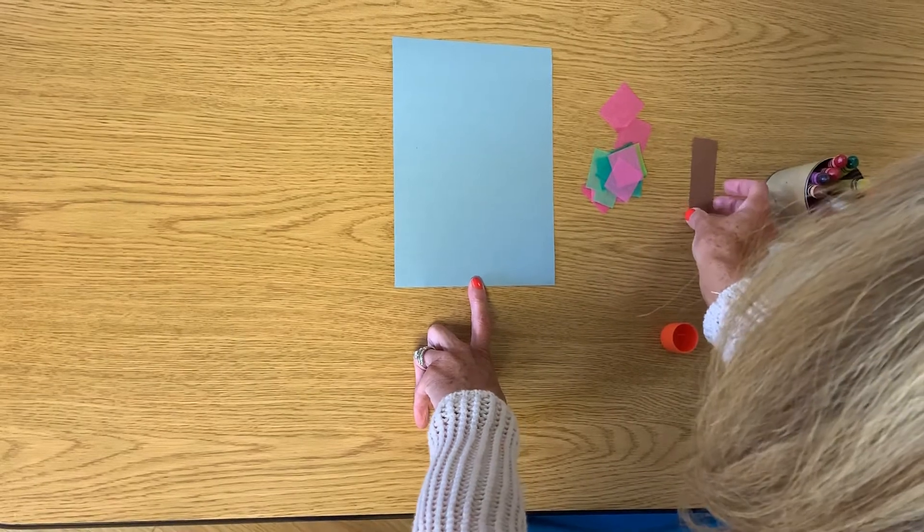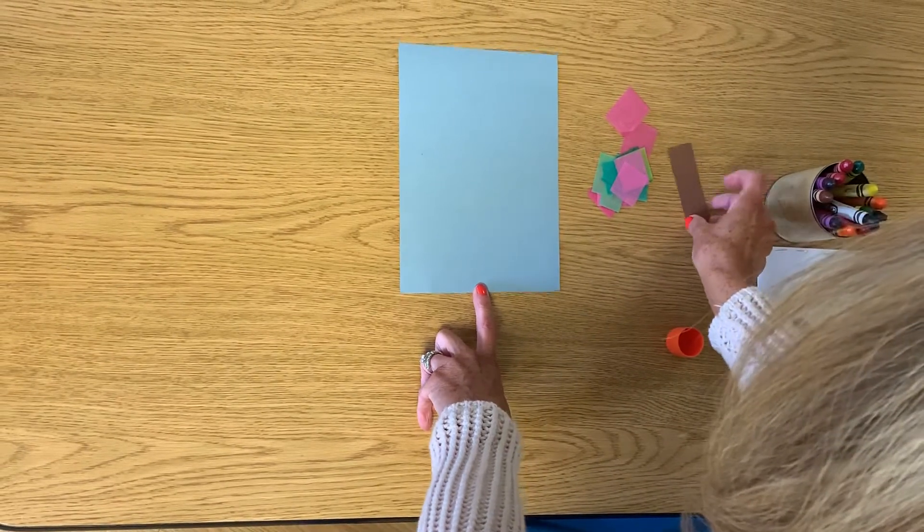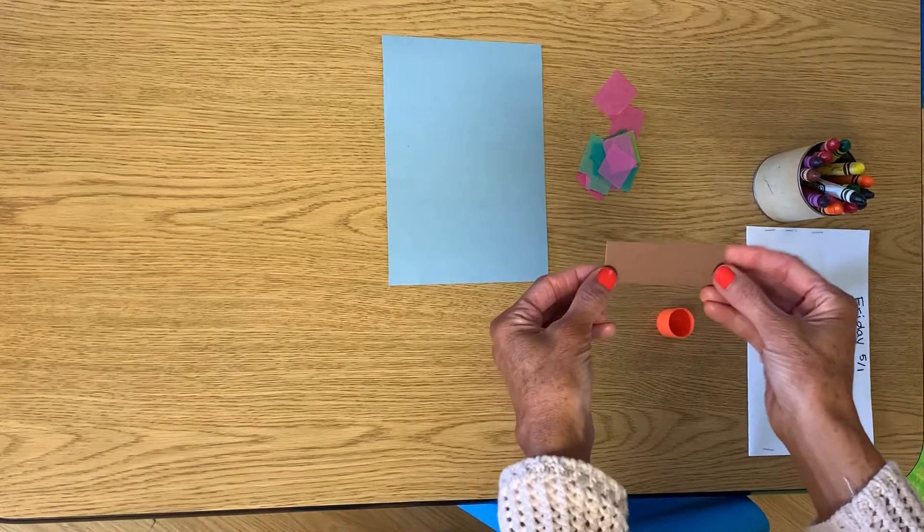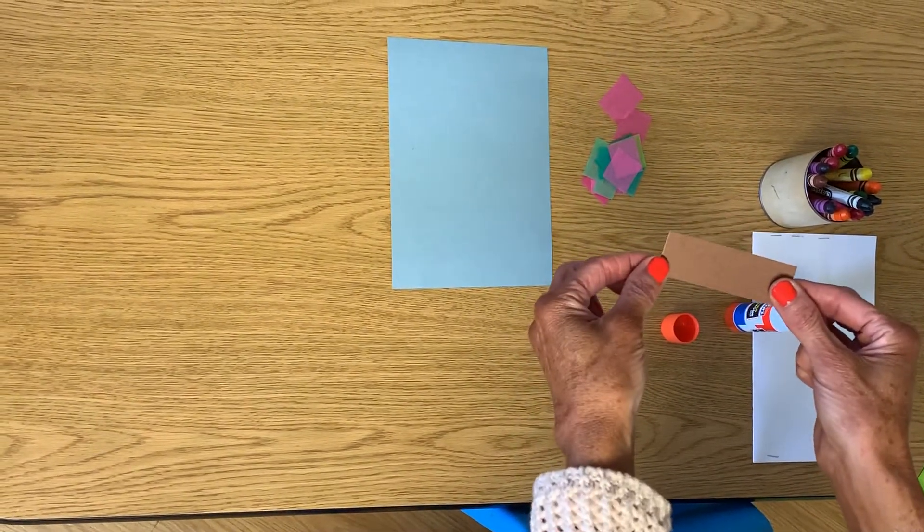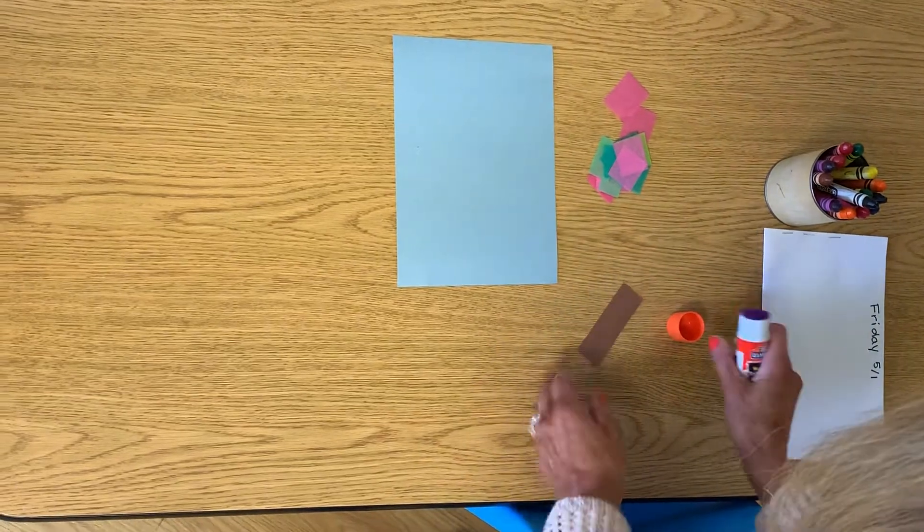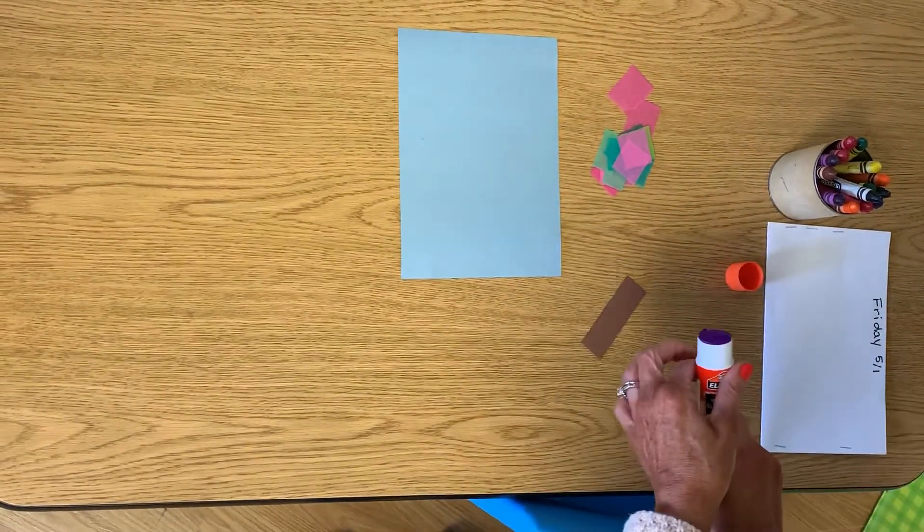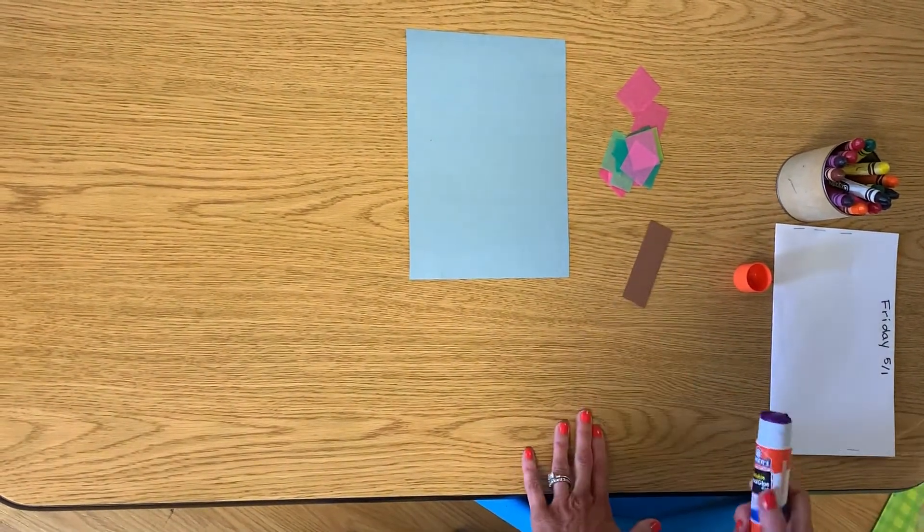Then I'm going to find my brown. What shape is this? Two long sides, two short sides, makes a rectangle. I don't want glue to get all over my blue piece of paper, so I'm going to set the brown off to the side. Put glue on the back.